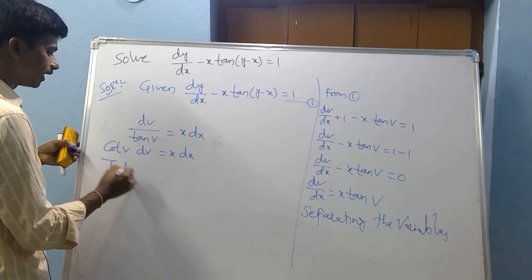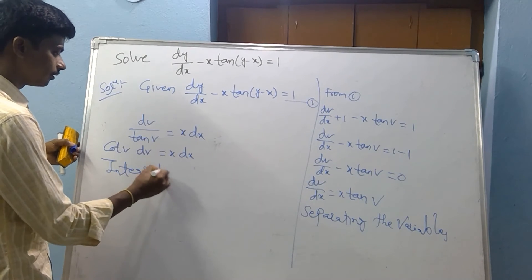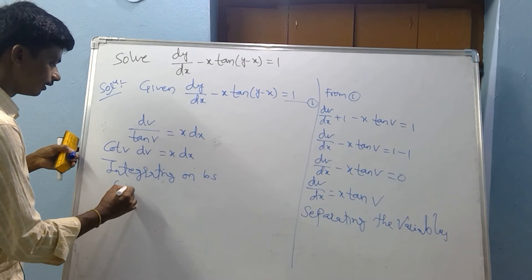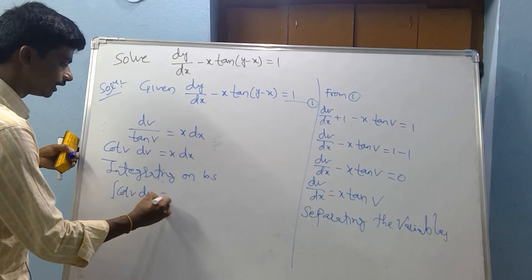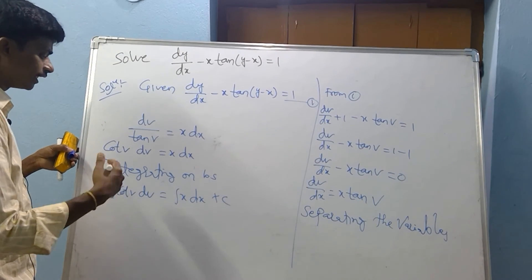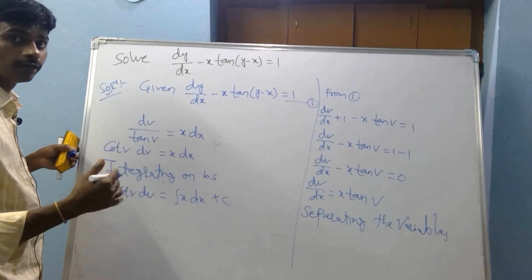Now integrating on both sides. Integral of dv by tan v equal to integral x dx. Integral cot v dv equal to integral x dx. Do you know here integral cot x dx is log mod sin x?